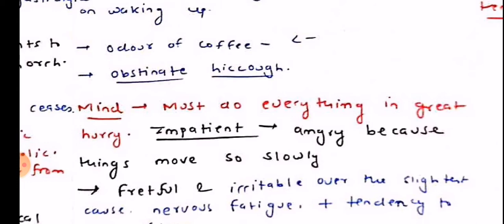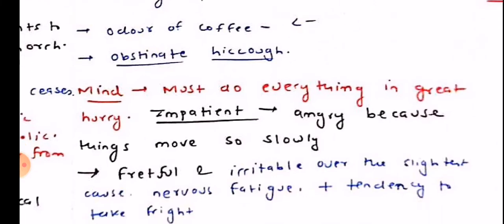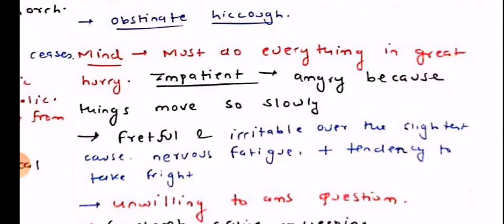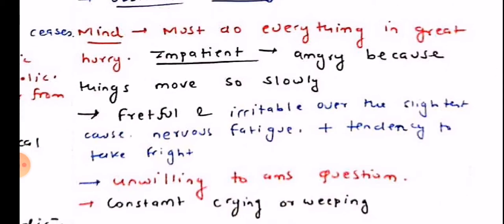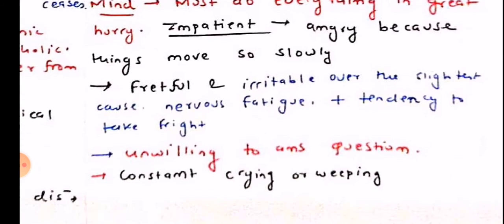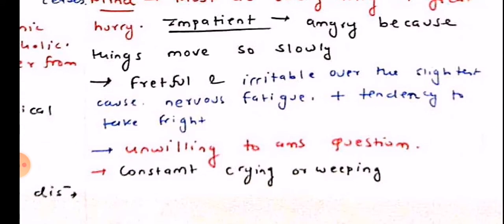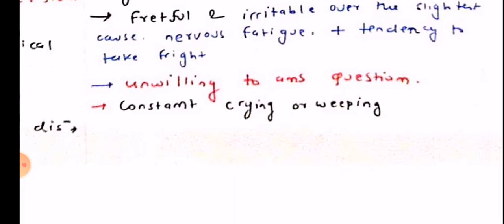Mind: must do everything in great hurry. The patient is very impatient, angry because things move so slowly, fretful and irritable over the slightest cause, nervous fatigue and tendency to take fright, unwilling to answer questions, and constant crying and weeping.